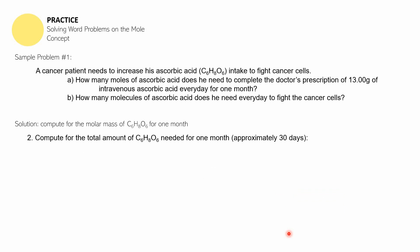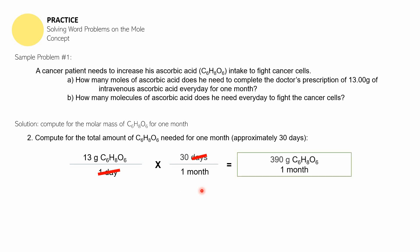For one month, we compute the total amount of ascorbic acid. If the prescription is 13 grams per day, we equate that as 13 grams per 1 day, then multiply by 30 days per 1 month. The days cancel out, and you get 390 grams of ascorbic acid per one month.